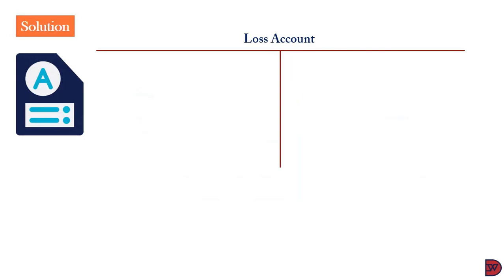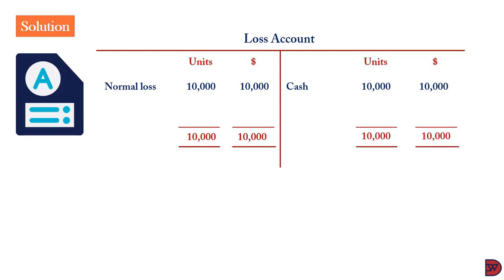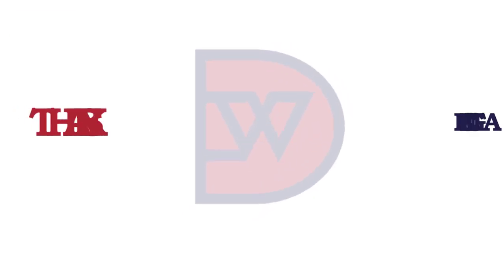When we come to the loss account, we will bring the normal loss to the debit side: 10,000 units at $10,000. A loss like an expense has a debit balance. Then we close it. It came with cash, so we credit it: 10,000 units going for $10,000. So we close the account: 10,000 units at $10,000.